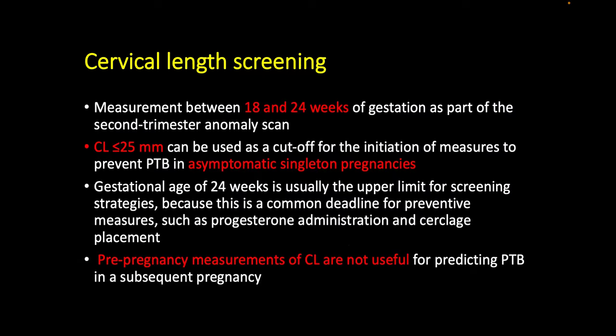In singleton pregnancies, cervical length screening should be done at the mid-trimester scan between 18 to 24 weeks during the routine anomaly scan. It is not worthwhile to measure the cervical length in the first trimester because management doesn't start then — guidelines don't recommend vaginal progesterone in the first trimester. Also, cervical length assessment in the first trimester is not very accurate by ultrasound because the lower uterine segment is not well developed, leading to overestimation of cervical length.